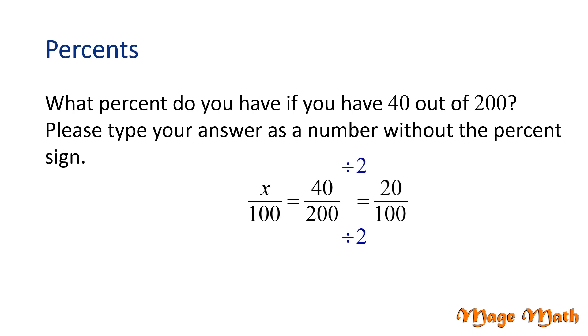We just found that 40 two-hundredths is equal to 20 one-hundredths. And remember that a percent is a number divided by 100. So, we found 20%. 40 two-hundredths is equal to 20%. Great job!